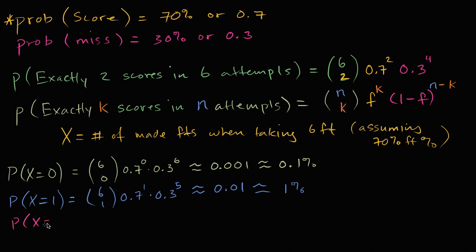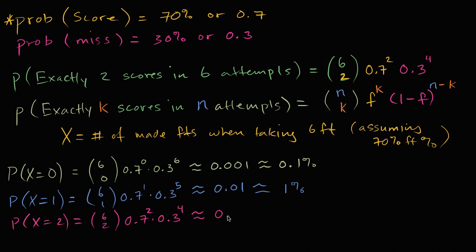The probability that x is equal to two — well, that's essentially what our first video was about. This is going to be six choose two, times 0.7 squared, times 0.3 to the fourth power. We saw that this is approximately 0.06, or six percent. You could type these into a calculator for a more precise answer, but to the nearest tenth of a percent you get 6.0%.